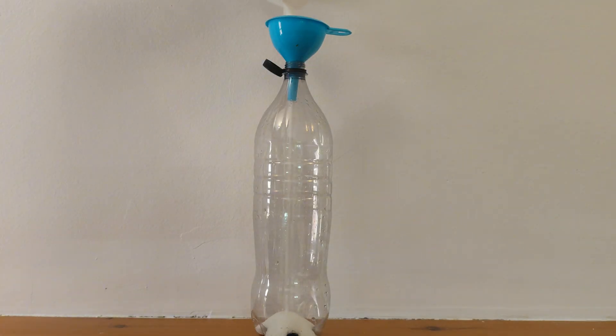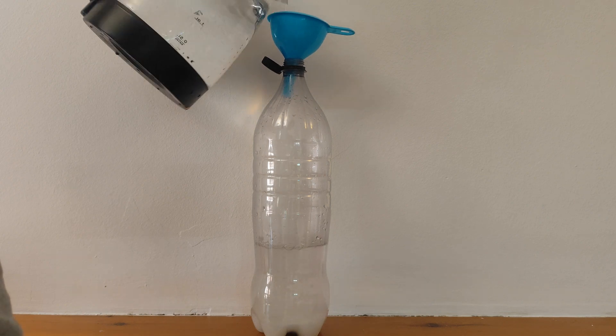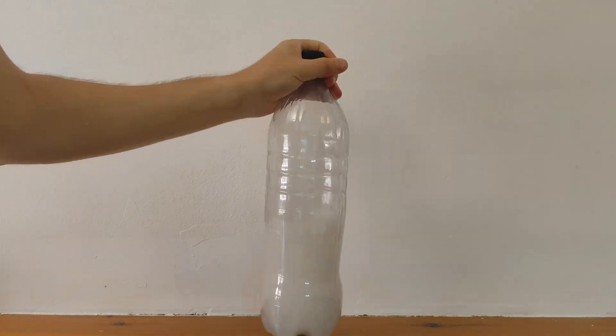Add the sugar to the bottle. I like to use a funnel to make things easier. Then fill about a third of the bottle with warm water. Close it up and shake it gently until all the sugar dissolves. You'll know it's ready when the water looks clear and there's no sugar sitting at the bottom.